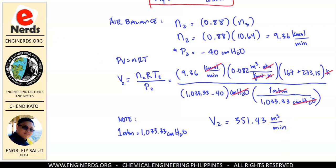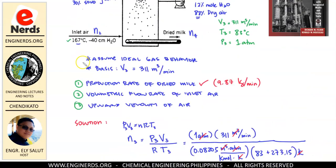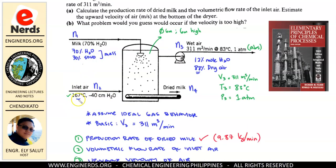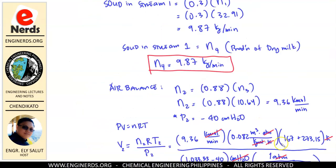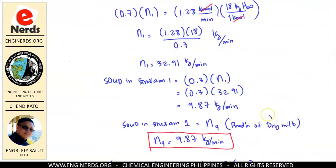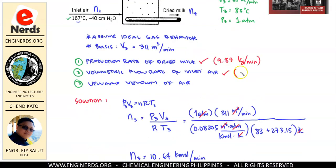We have now obtained the volumetric flow rate of stream 2, which is the inlet dry air: 351.43 cubic meters per minute. This answers the second requirement — the volumetric flow rate of the inlet air is 351.43 cubic meters per minute.